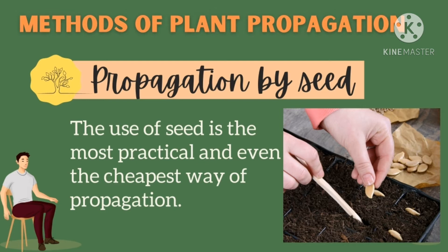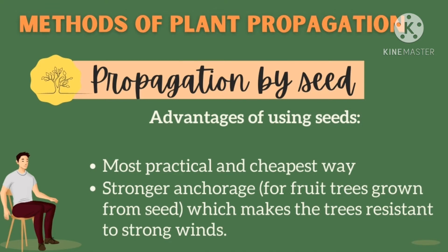The use of seed is the most practical and even the cheapest way of propagation. There are advantages of using seeds. First, it is the most practical and cheapest way — cheapest because it is the offspring of the plant and can be produced in large quantities. Second, stronger anchorage for fruit trees grown from seeds, which makes the trees resistant to strong winds, since growth develops naturally from seed stage down to maturity.